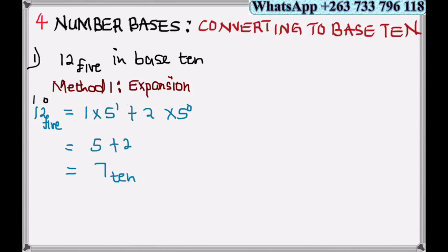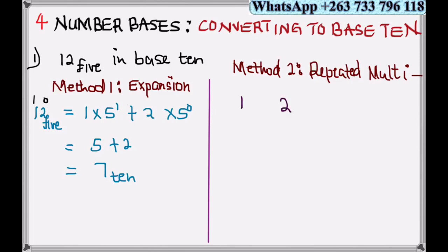Which equals 7 base 10. The second method, pay attention: it's called repeated multiplication. This is highlighted in the General Mathematics Book 3. We can expand this number by doing the following: multiply the first number by the base, then add the next number.